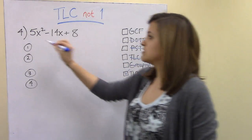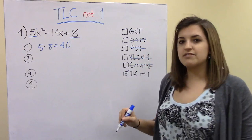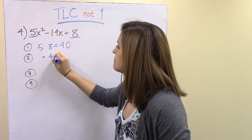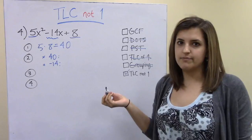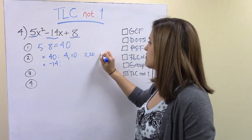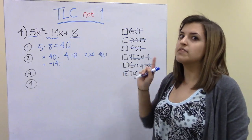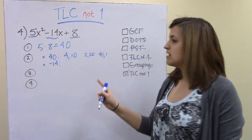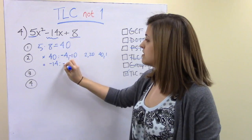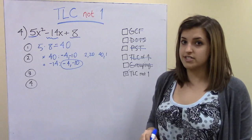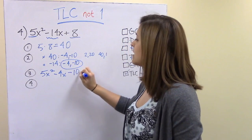Step one: multiply the leading coefficient and constant — 5 times 8 equals 40. Step two: find two numbers that multiply to 40 and add to negative 14. Possible factor pairs include 4 and 10, 2 and 20, or 40 and 1. Since we need a sum of negative 14, we use negative 4 and negative 10, because negative 4 plus negative 10 equals negative 14 and (−4)(−10) = 40. So we split the middle term: 5x² − 4x − 10x + 8.